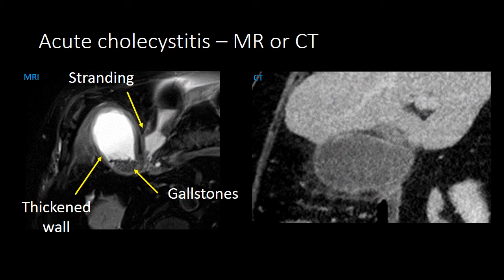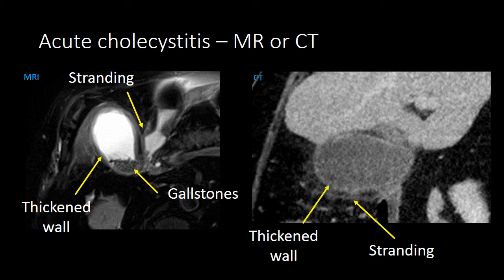In the other example, we may not be able to see the gallstones on CT, but we can identify the stranding adjacent to the gallbladder and gallbladder wall thickening. In both of these cases, the patient had acute cholecystitis.